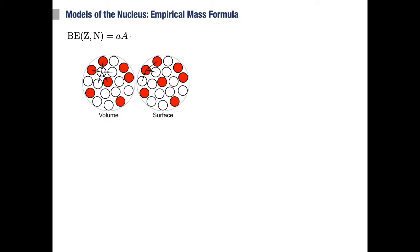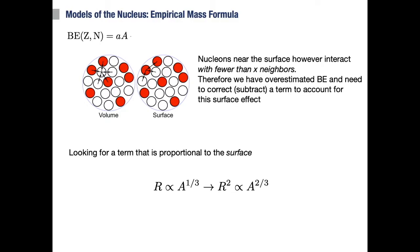To correct for this, we need to subtract a term that is proportional to the surface. Because, as we saw earlier, the radius scales with the cube root of A, the surface will be the square of that, so proportional to A to the power of two-thirds.